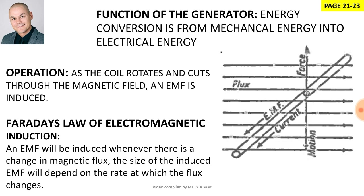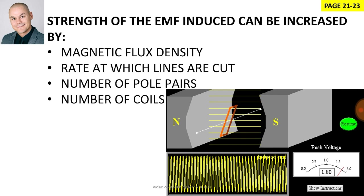The generated EMF will be in the same direction as the current. The strength of the induced EMF, or the size of the induced EMF, is dependent on the magnetic flux density, the rate at which the lines are cut, the number of pole pairs, and the number of coils.